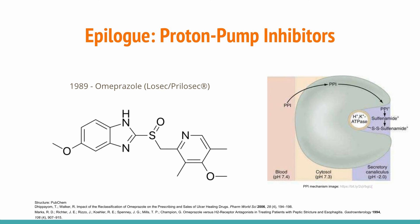Roxatidine would have been a game-changer for the treatment of PUD and GERD had it not been for the release of the first proton pump inhibitor, omeprazole or Prilosec, in 1987. In contrast to the reversible inhibition of the histamine receptor by H2 antagonists, PPIs covalently bind to the ATPase proton pump in gastric parietal cells, yielding irreversible inhibition and substantially longer half-lives — 24 hours compared to an average of 3 hours for H2 antagonists. Omeprazole thus spelled the end of H2 blockers as the premier gastric acid drugs, though today they are still available as generic and over-the-counter drugs, offering affordable options for moderate acid reflux.